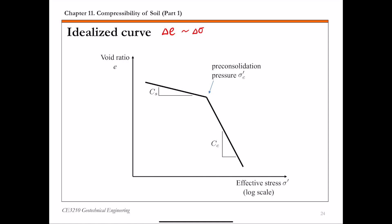Looking at this curve, it has two straight lines. The first straight line has a shallower slope — this is what we call the recompression part of the curve, which clay follows if you unload and reload it. C sub S, the slope of this straight line, is called the swell index or recompression index. The second straight line has a steeper slope — this is the virgin compression part of the curve, with a slope C sub C called the compression index. The turning point is the pre-consolidation pressure sigma C prime. Depending on the relationship between the initial effective stress sigma naught prime, the pre-consolidation pressure sigma C prime, and the final effective stress sigma F prime, there are different cases of consolidation calculation, which we'll go over in the next few slides.